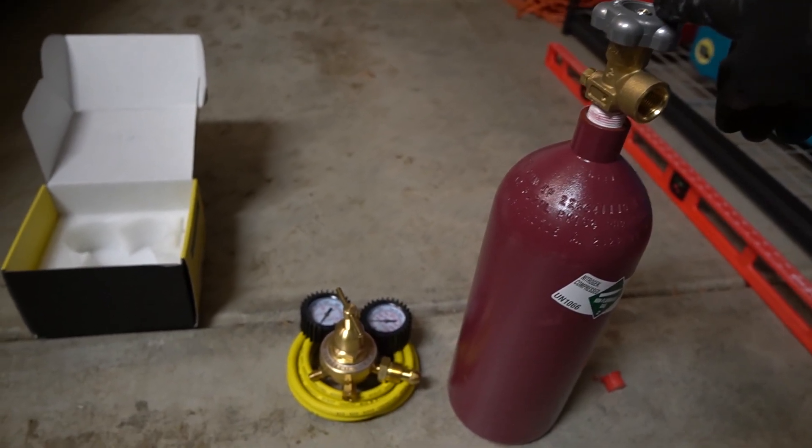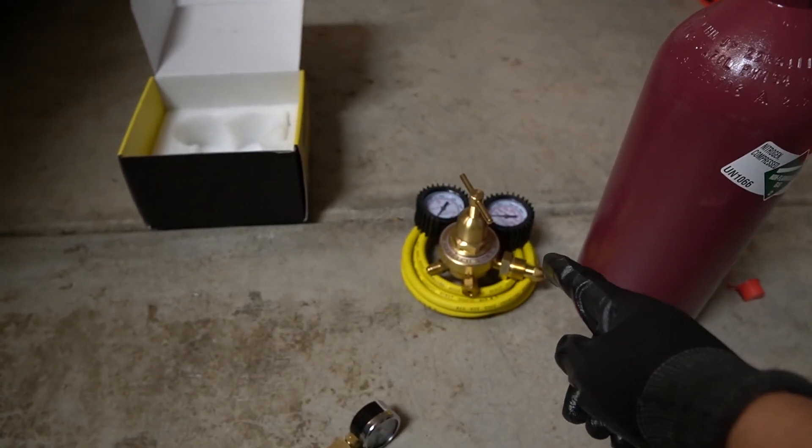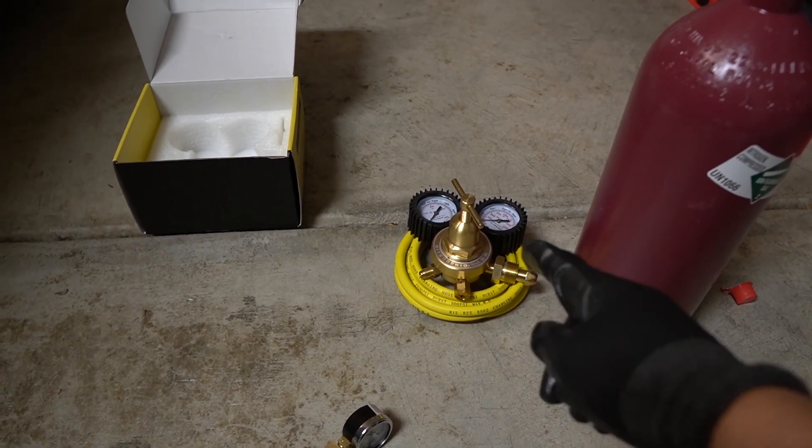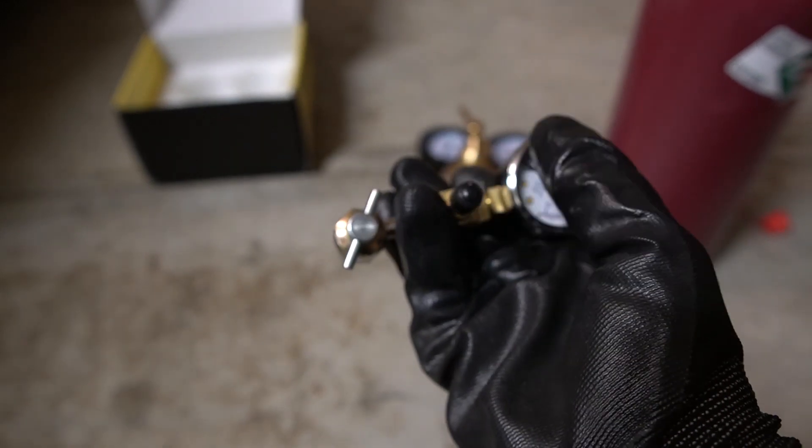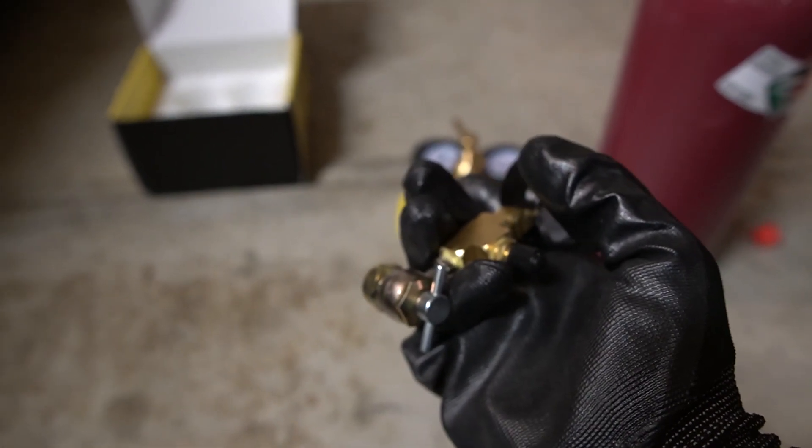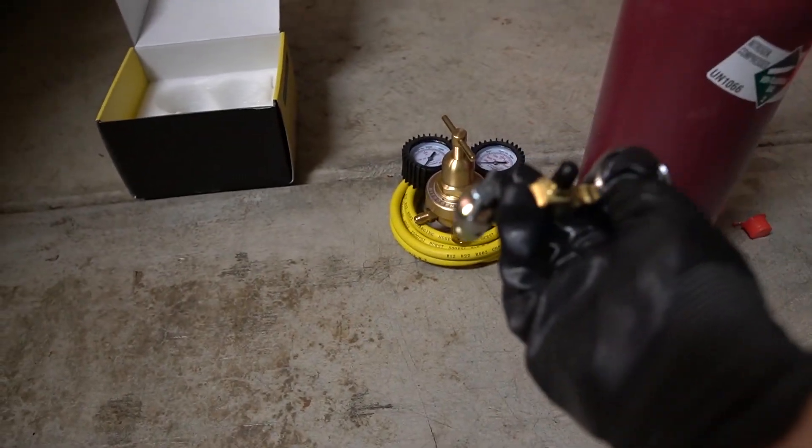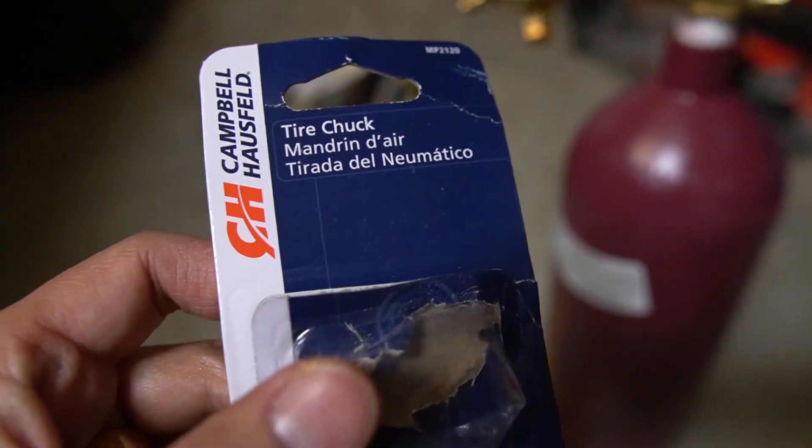I bought this gas regulator on Amazon for about $30, and this no air loss chuck with a gauge I got on eBay for around $60. So all-in including tax is about $250.